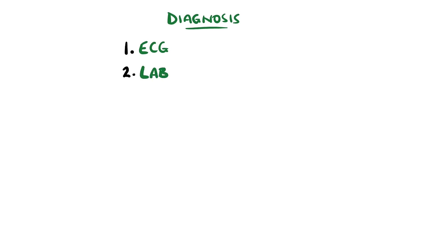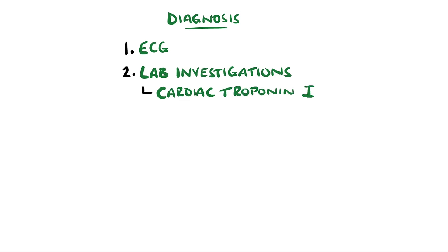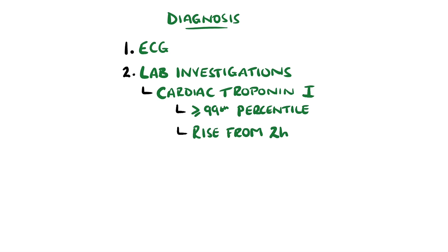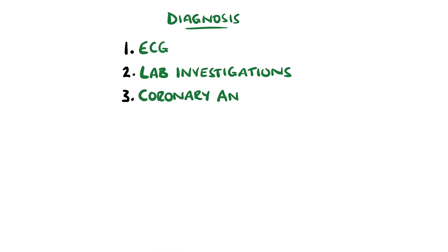The primary lab investigation is use of cardiac troponin I assays, a protein released from the cardiac myocytes upon cell death. Exact values vary by lab, but generally values above the 99th percentile are considered abnormal. Levels generally rise from 2 hours after the onset of chest pain and peak at around 12 to 48 hours. They can remain elevated for between 4 and 15 days. Coronary angiography is the definitive investigation and provides visualisation of the affected coronaries, especially prior to primary percutaneous coronary intervention.